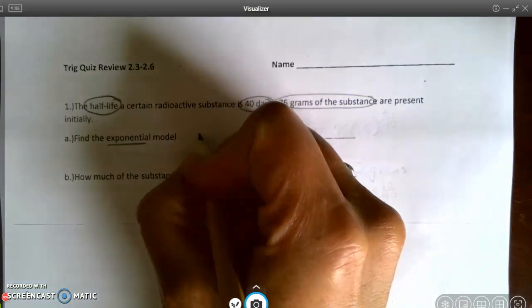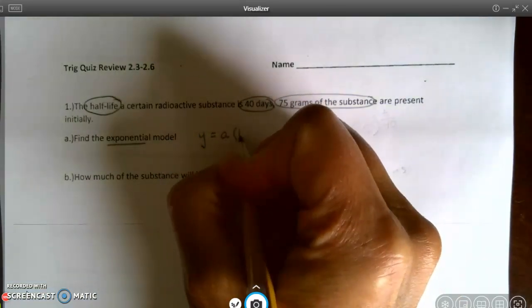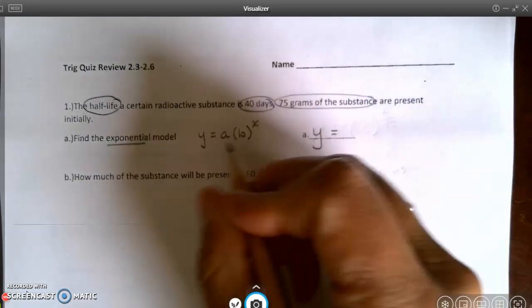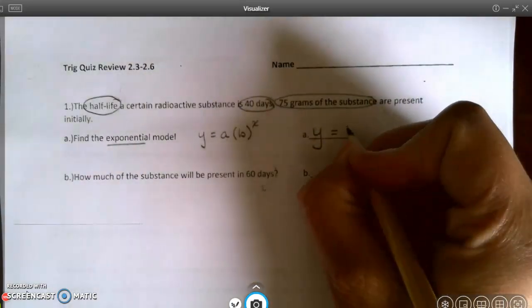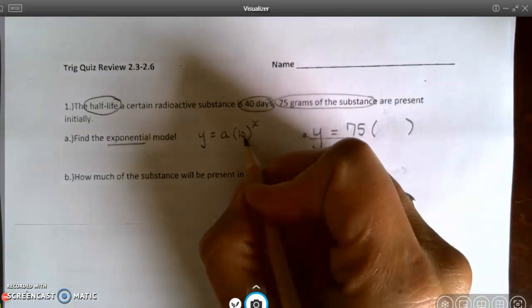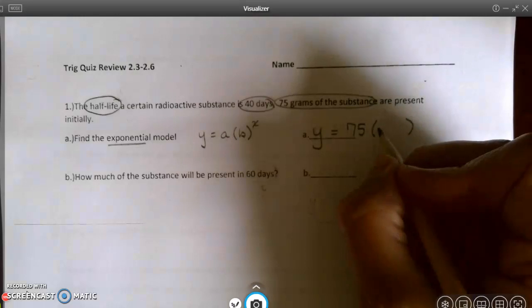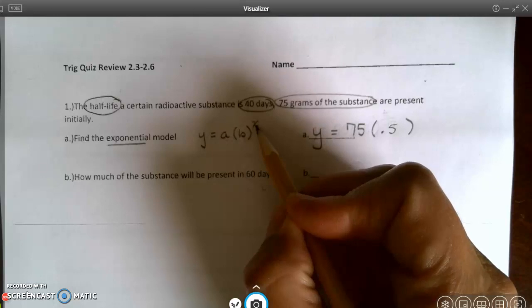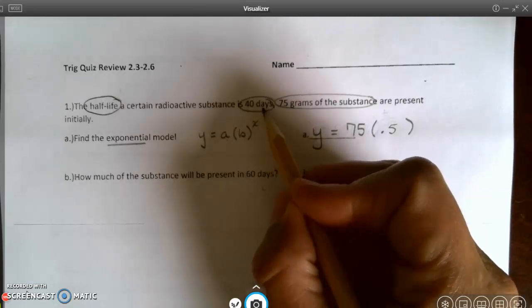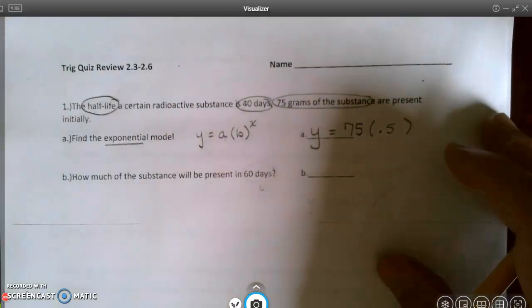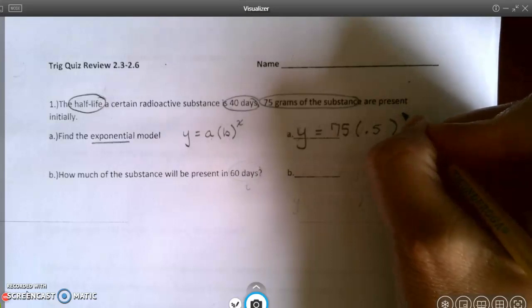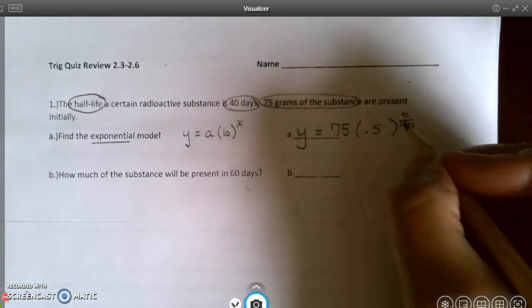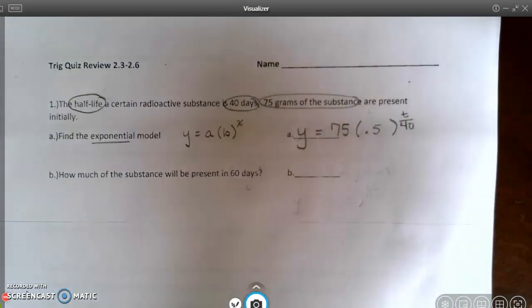If it's an exponential model, it's probably going to be y equals a times b to the x value. So y equals, a is always my initial amount, that's 75 grams. My b is always my growth factor, and because it's half-life, my growth factor is 0.5. And x is the time, and there's 40 days in a half-life, but I also have to think about what's my total number of days. So it's going to be total number of days divided by 40. That will give me my number of half-life periods that I would want that half-life raised to.